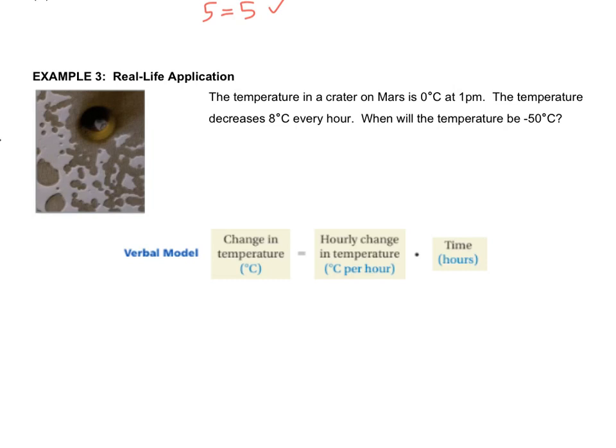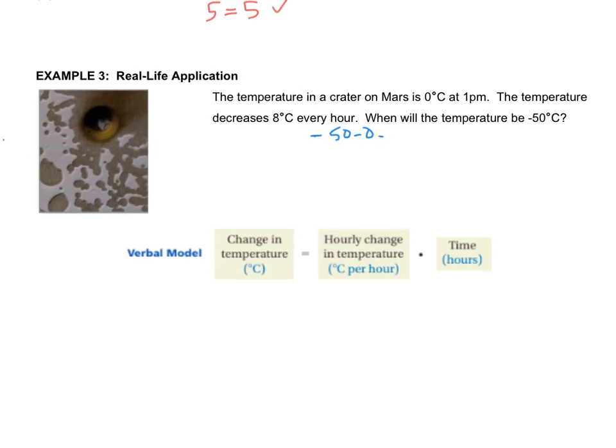Every hour, it's changing by 8 degrees. So, the question is, how long will it take until it's negative 50 degrees Celsius? Conveniently, the difference between 0 degrees and negative 50 degrees is negative 50 degrees. So, we would do negative 50 minus 0 if we weren't sure how to do that. Take the final temperature minus the beginning temperature and you'd get negative 50. That's how you would do it if it wasn't easy to start at 0. But, we put down negative 50 is the change in temperature that we want.